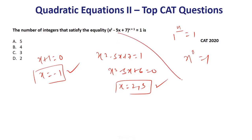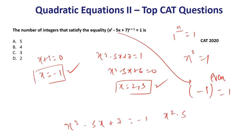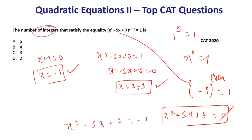Case 3: base = -1 with an even power also gives 1. So x² - 5x + 7 = -1 → x² - 5x + 8 = 0. But this does not give integer solutions. So the number of integer solutions is 3.